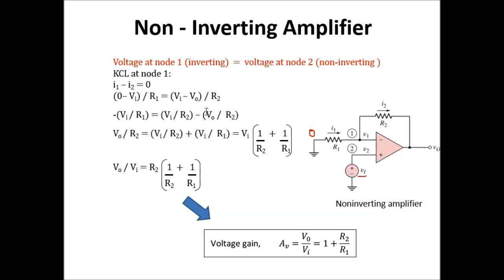Rearranging the KCL equation and simplifying, then bringing vout over vi: multiply through by R2 and you get the voltage gain vout over vin equal to 1 plus R2 over R1.